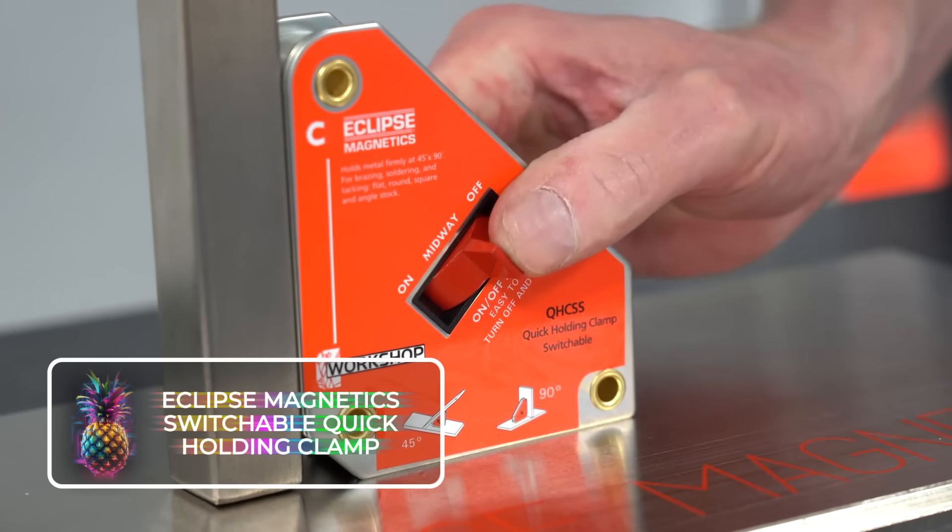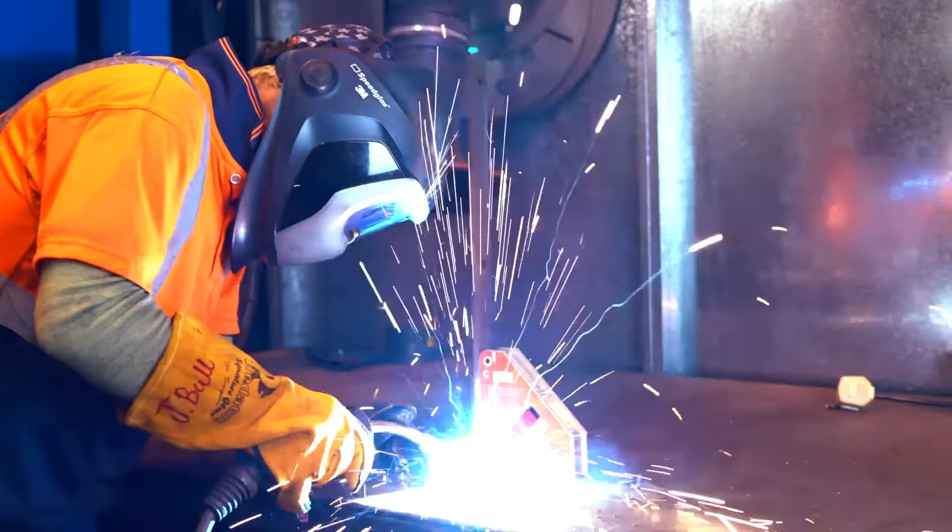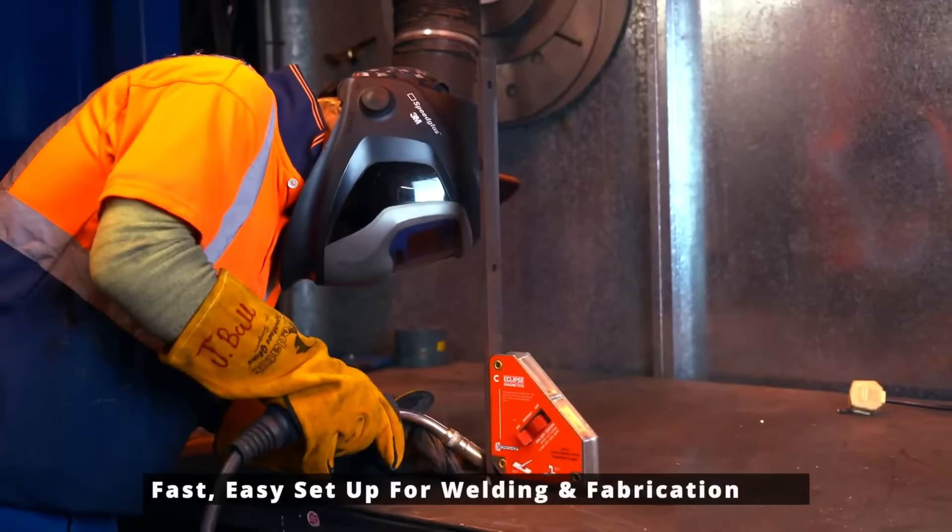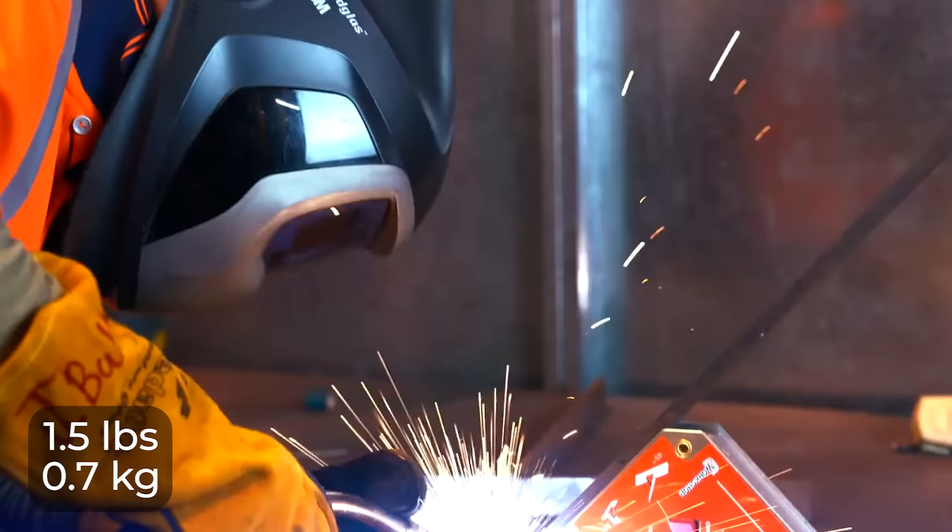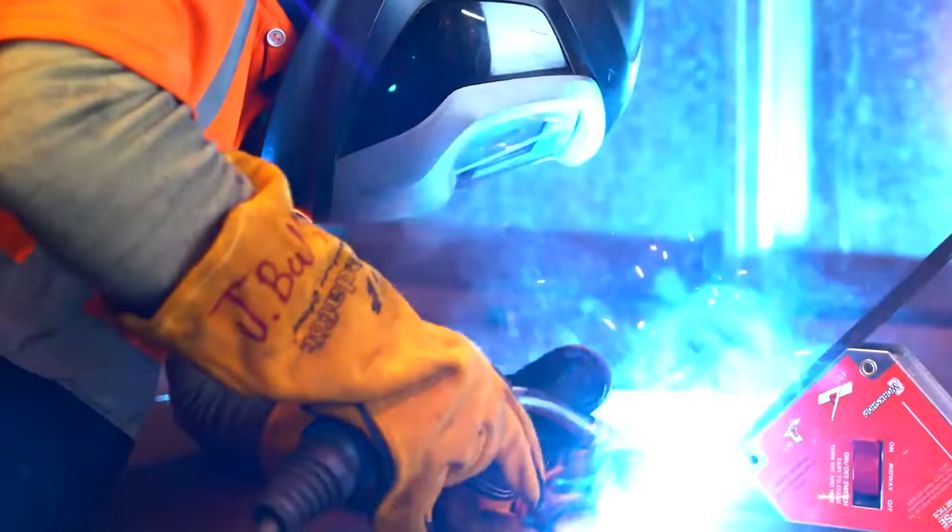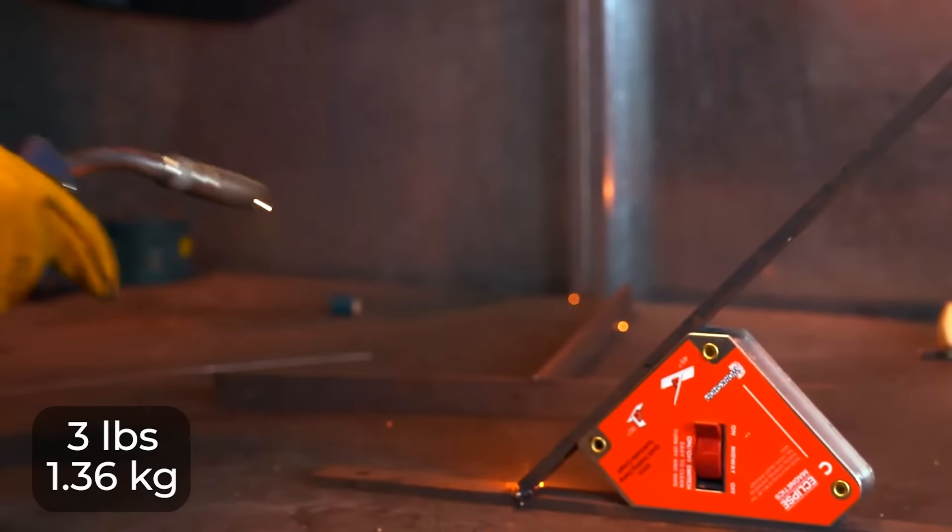Eclipse Magnetic Switchable Quick Holding Clamp. Just so all the welders out there don't feel left out, here's a tool that promises to add a little bit of convenience to their workdays too. This holding clamp is currently available in two different sizes. The first is a 1.5-pound or 0.7-kilogram version that offers 88 pounds or 39.92 kilograms of force.